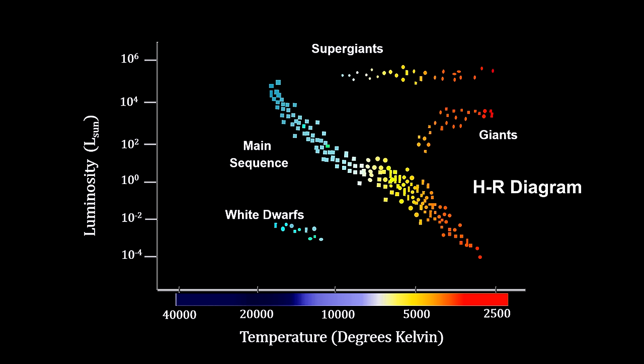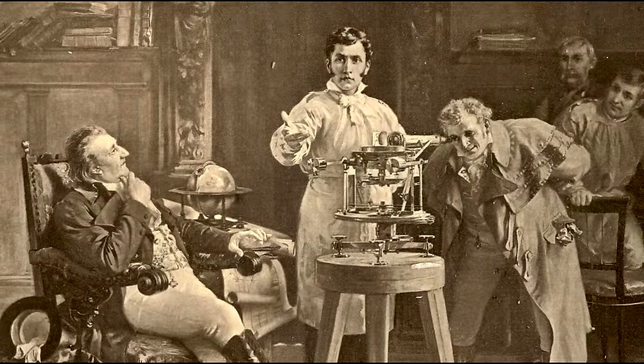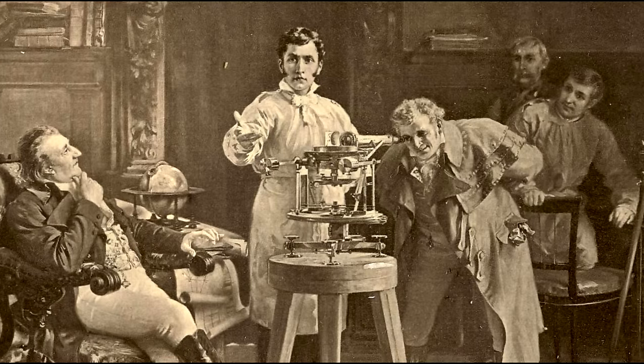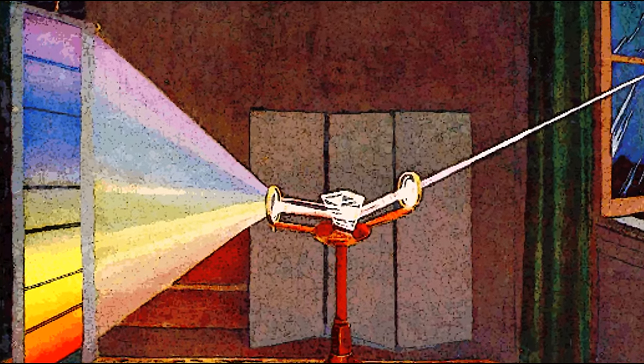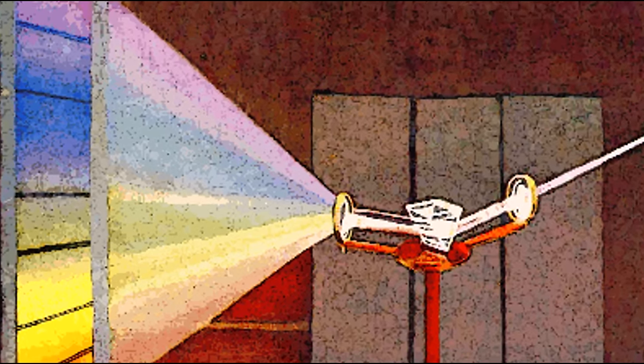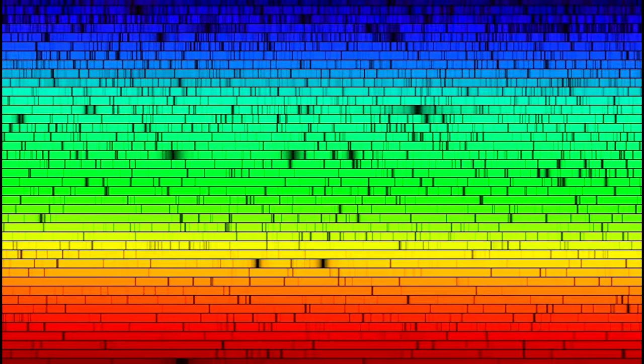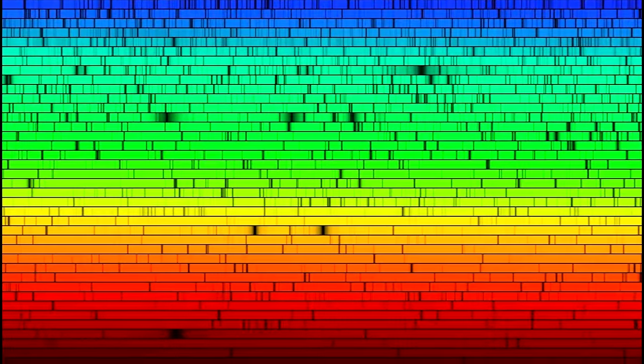Now that we understand the meaning of the HR Diagram, let's see how we can use it to find how far away a star is. For that, we need to view light as a particle and examine its spectrum. Early in the 19th century, German chemist Joseph Fraunhofer invented the spectroscope — an instrument to automatically separate light and mark the wavelengths. In so doing, he discovered that when he spread sunlight into a spectrum, it was crossed by a great number of fine, dark lines. He had no idea what these dark lines were, but today we know they were the key to learning what stars are made of.